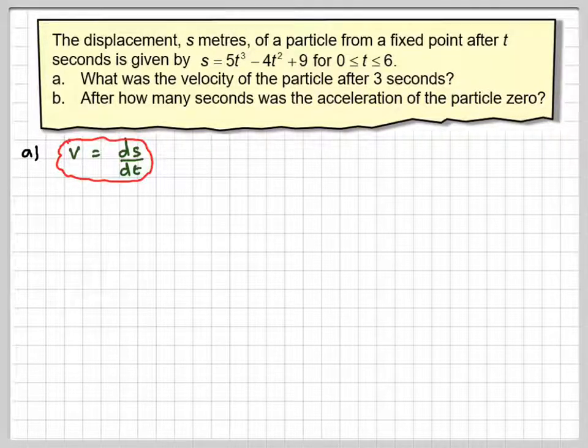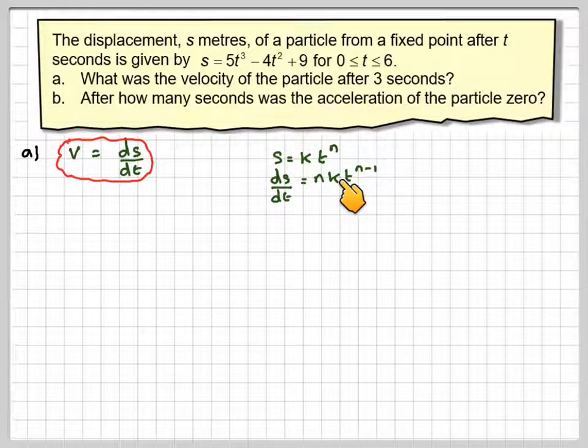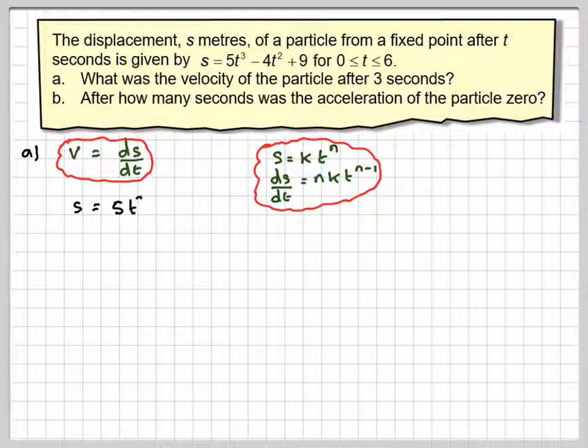If you want to find velocity from displacement, you have to differentiate displacement with respect to time. So s is equal to kt to the n. If you differentiate that, it means you bring the power down in front, write down the same thing, and reduce the power by 1. We've got s is 5t cubed minus 4t squared plus 9.